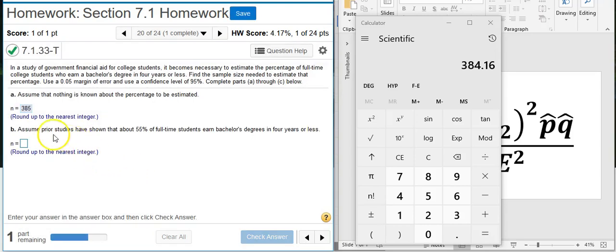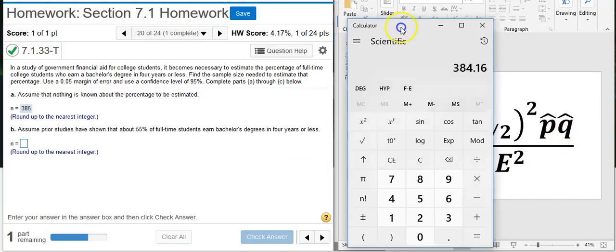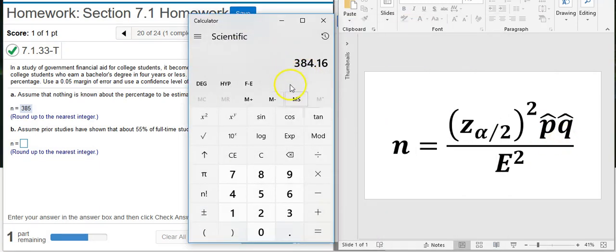Now Part B says assume prior studies have shown that about 55% of full-time students earned bachelor degrees in four years or less. Now we have a value for p-hat q-hat. So if you want, go ahead and run through the same calculation that we just ran through for Part A, using this same formula. You can start from the very beginning, if you want, or you can follow the shortcut that I'm going to show you here.